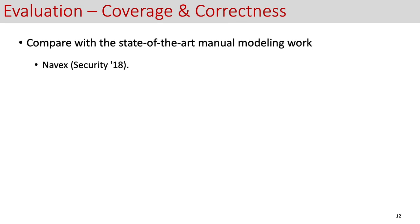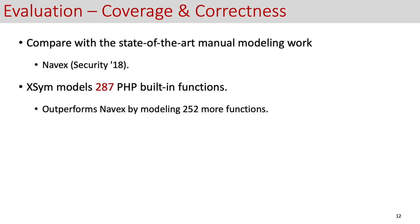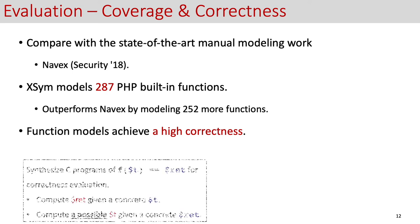We thoroughly evaluate XSym. We compare it with the state-of-the-art manual modeling work Navex, and in our experiments, we found that XSym shows a higher coverage by modeling 287 building functions. Further, XSym outperforms Navex by modeling 252 more building functions. The correctness of the building functions is also essential. Our evaluation demonstrates that XSym has a higher correctness.